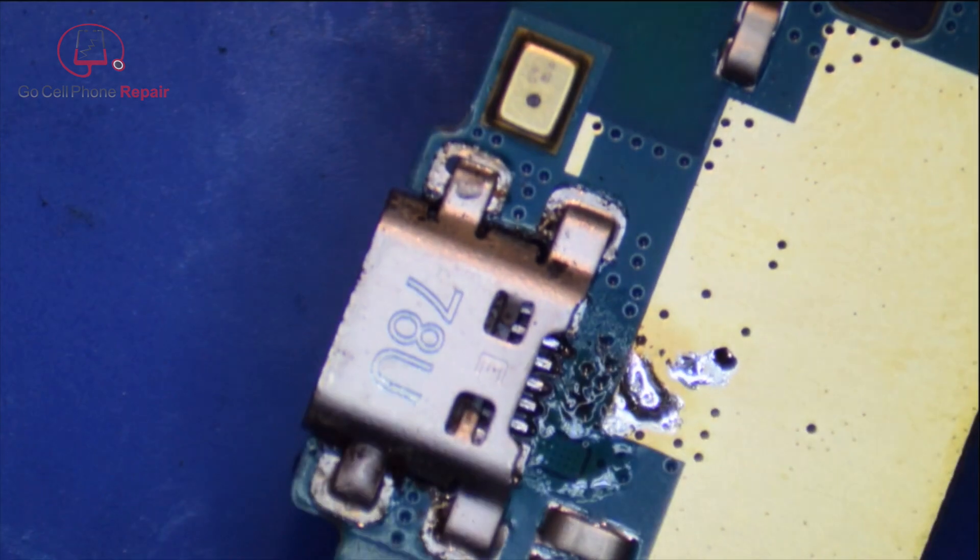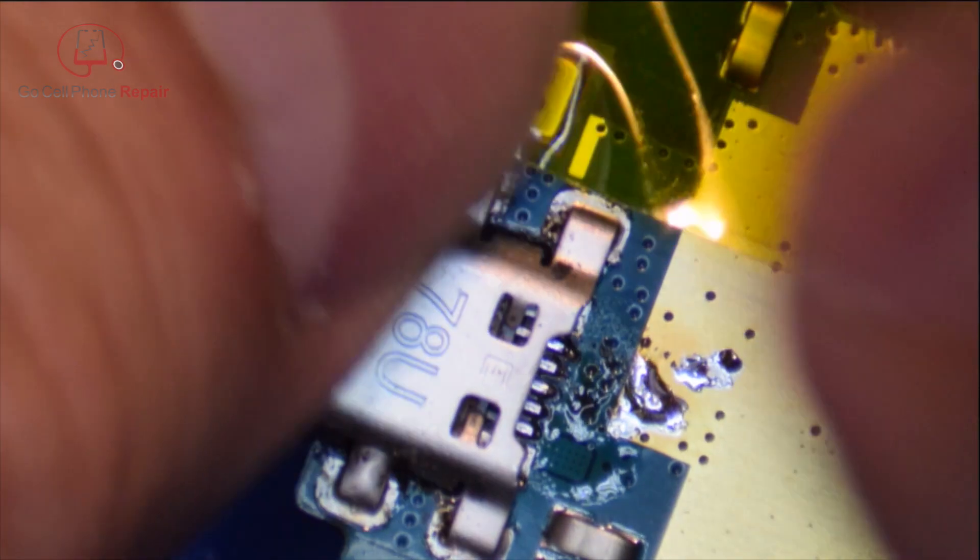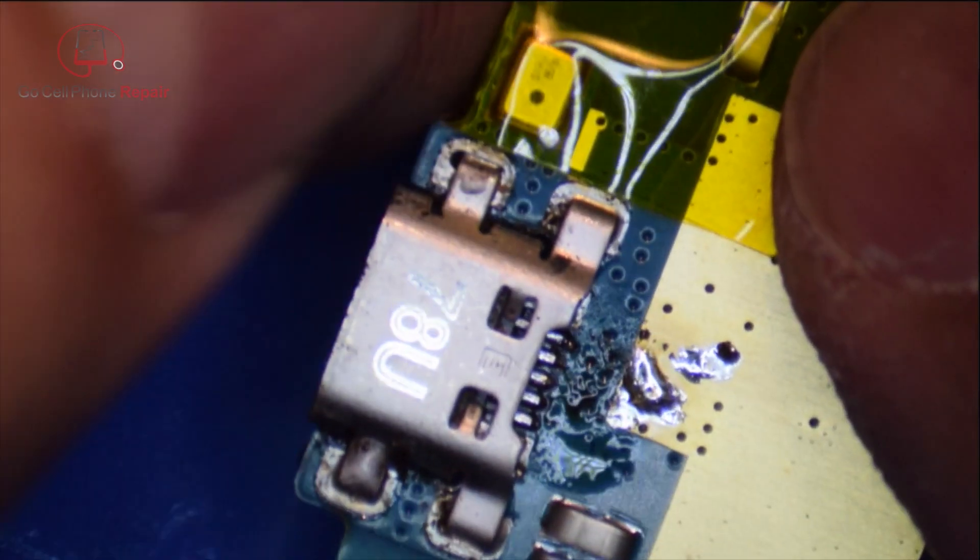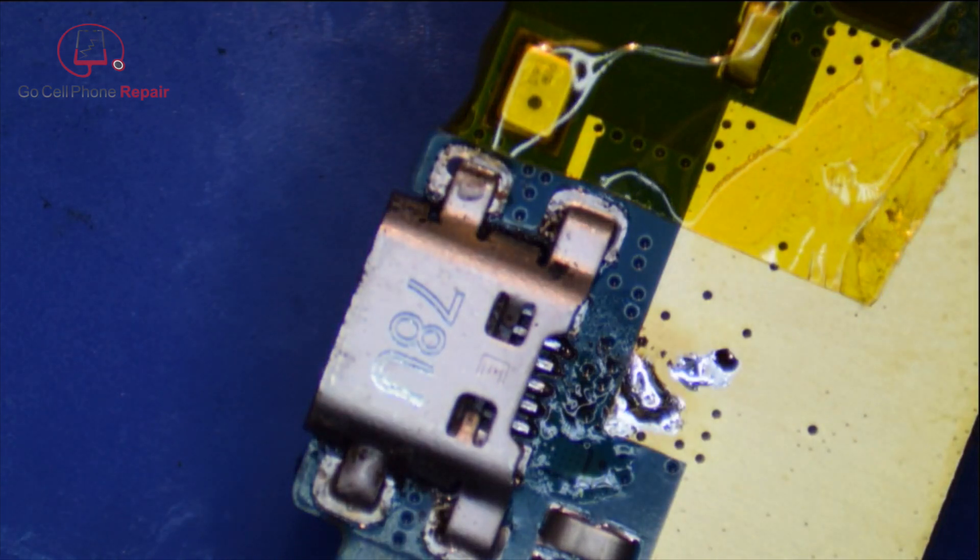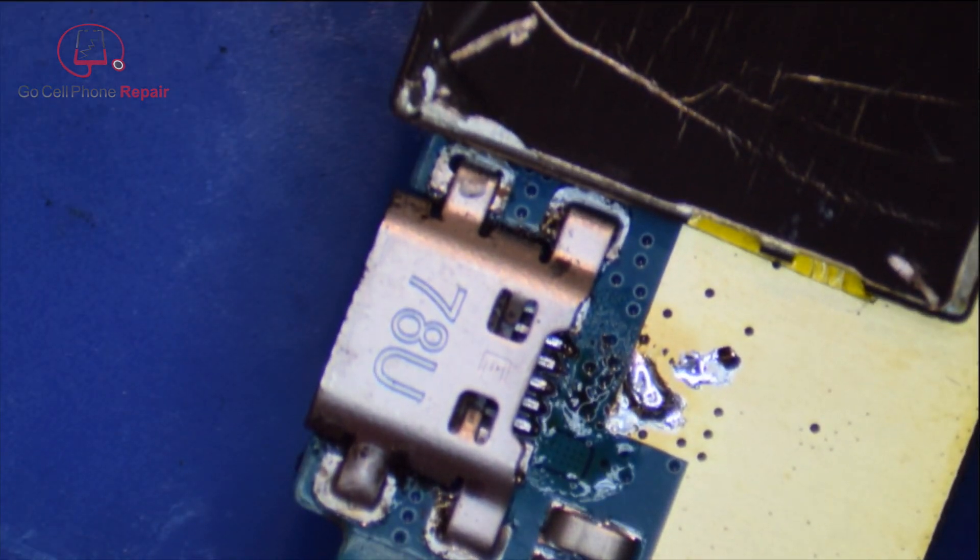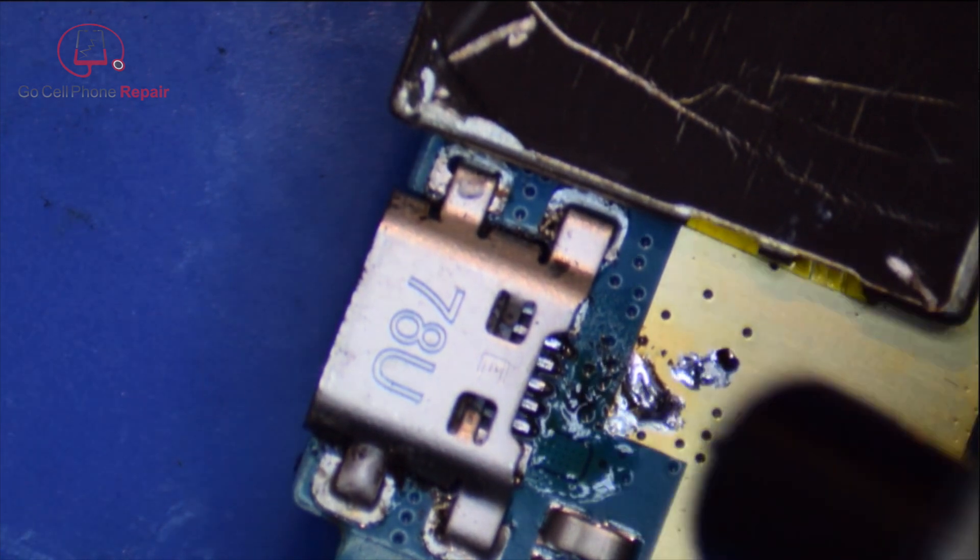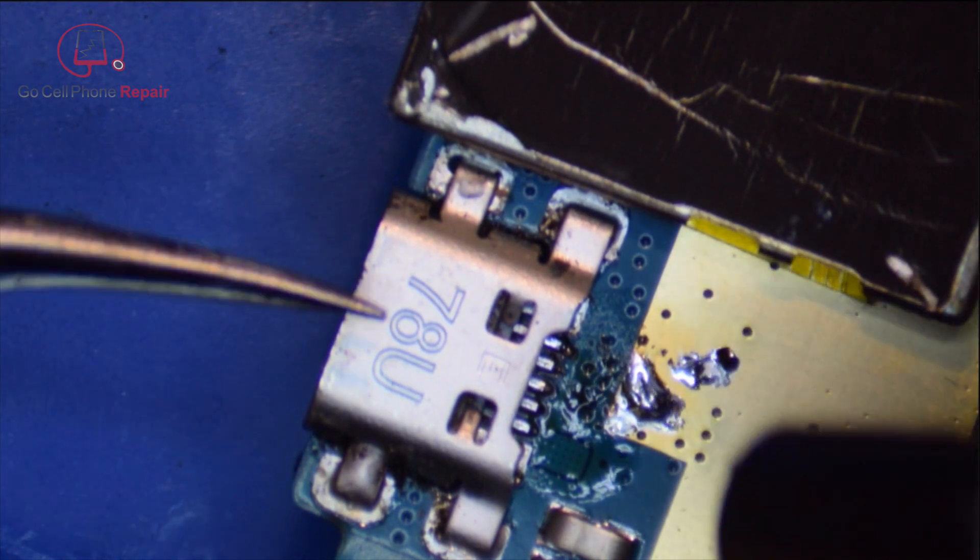Don't worry about that excess solder on the side - we will clean that up later. I am going to Kapton over the microphone. This is one of the things about this particular model - the mic is right next to the port, so we don't want that floating off. I'm even going to add a shield right over the top of that mic to deflect some of the heat. If it does get too hot and starts floating around, we have the Kapton to hold it in place.